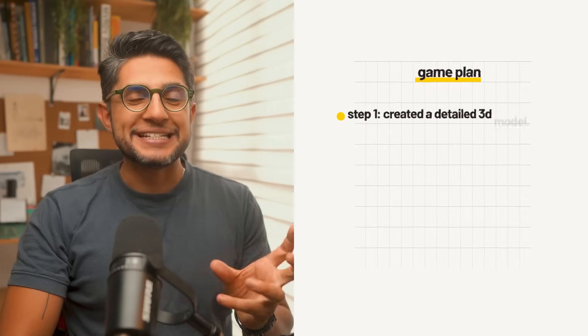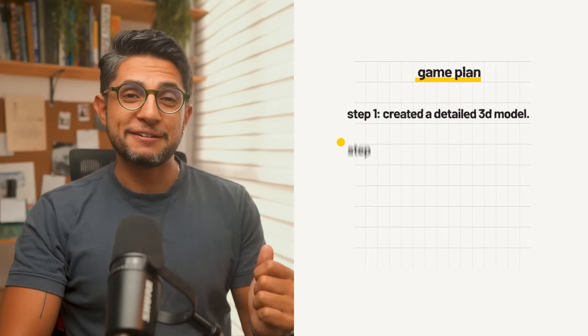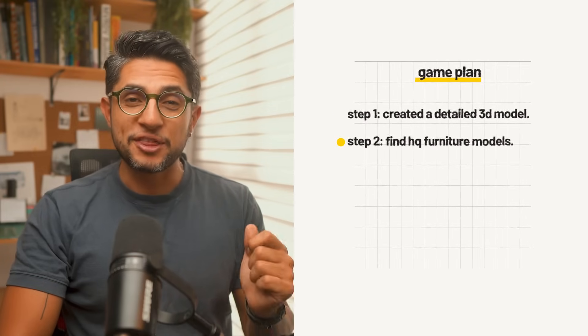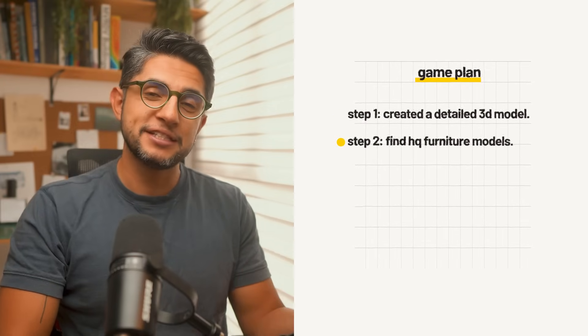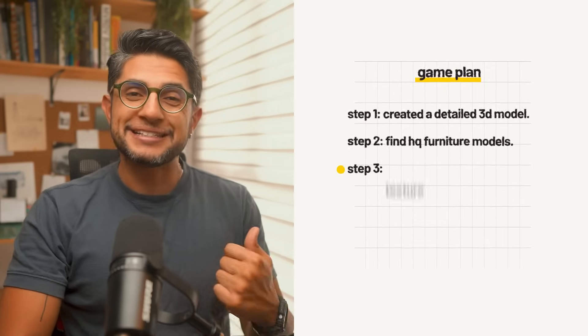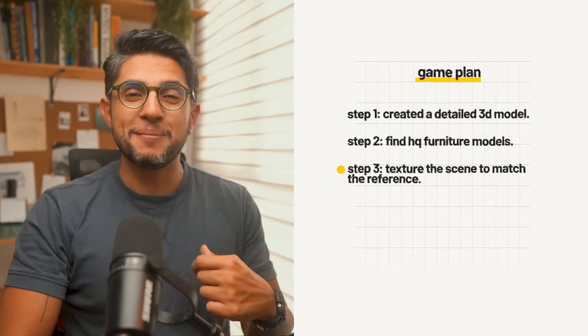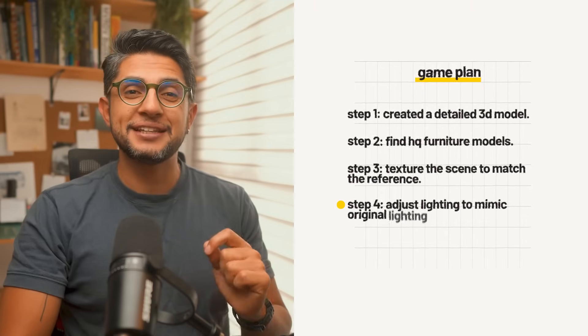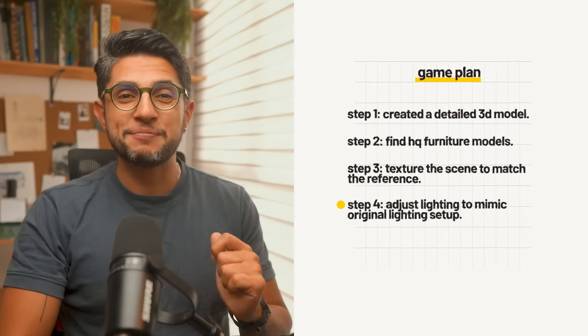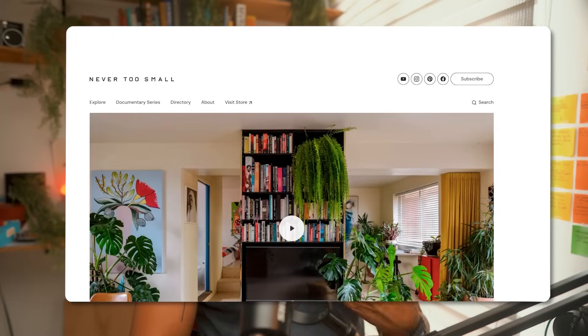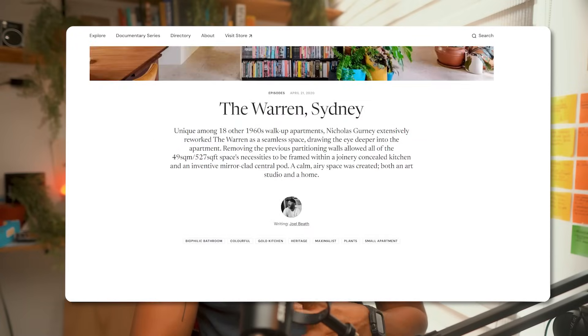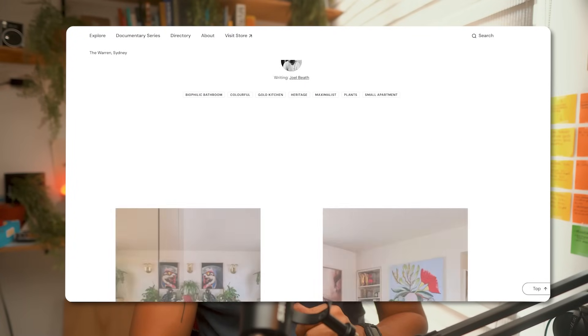With this reference, I broke down my approach into four different parts. First, create a detailed base 3D model. Second, find quality 3D models similar to those in the reference images. Third, texture the scene to match the picture. Fourth, adjust the lighting and settings to mimic the original lighting setup. Thanks to my reference, I quickly identified the elements I needed to start my image.